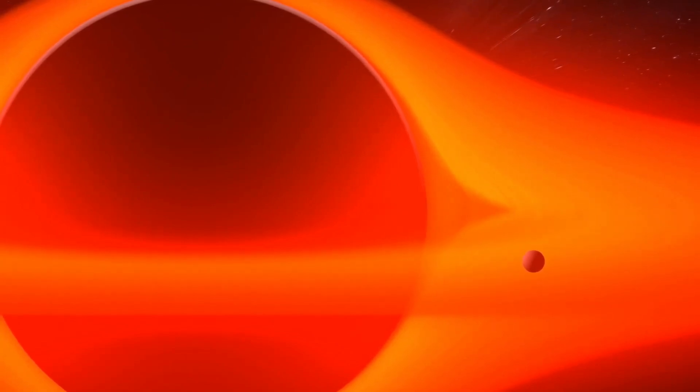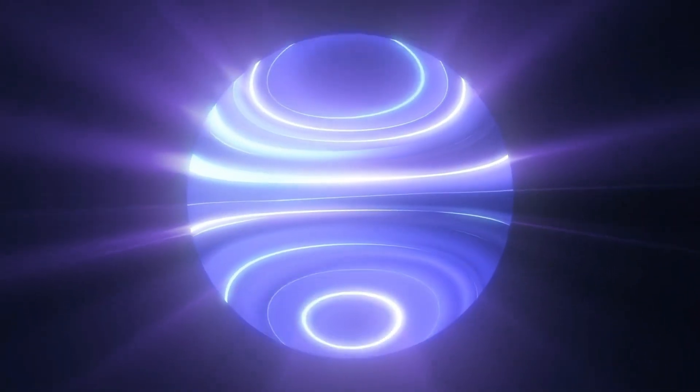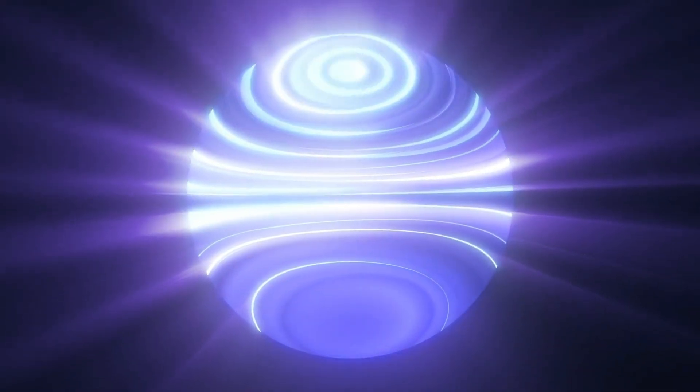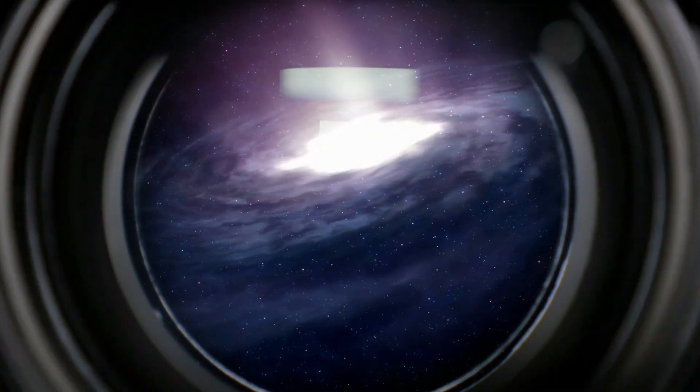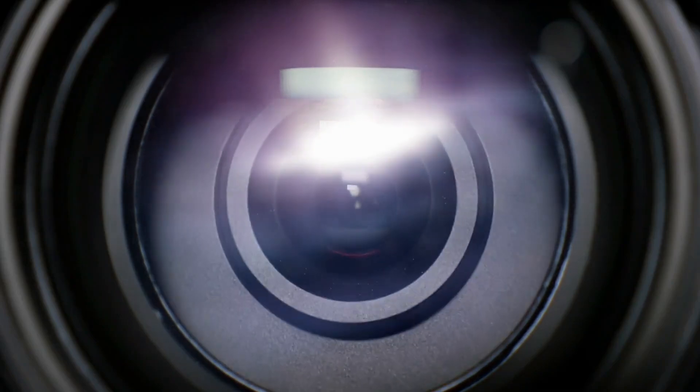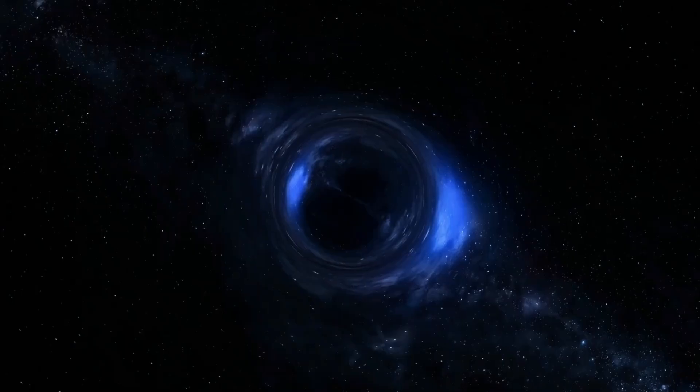Gravitational microlensing occurs when a massive object passes between an observer and a distant light source, like a star. The gravity of the massive object bends the star's light, amplifying it and creating a lensing effect. This effect can be detected by sensitive telescopes and is one of the few direct ways to detect massive objects that do not emit light, like black holes.